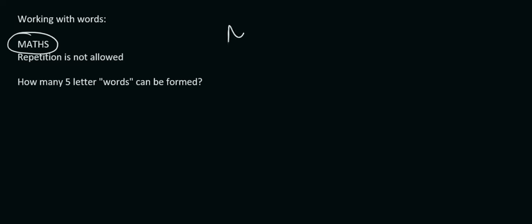So we have M, A, T, H, and S — that's what we have available. And we want to know how many five-letter words can be formed, so we open up five different places.